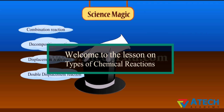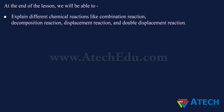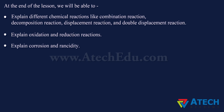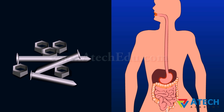Welcome to the lesson on Types of Chemical Reactions. At the end of the lesson, we will be able to explain different chemical reactions like Combination Reaction, Decomposition Reaction, Displacement Reaction, Double Displacement Reaction, Oxidation and Reduction Reactions, as well as Corrosion and Rancidity.